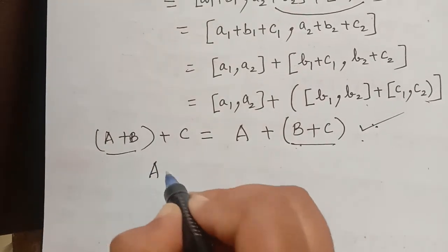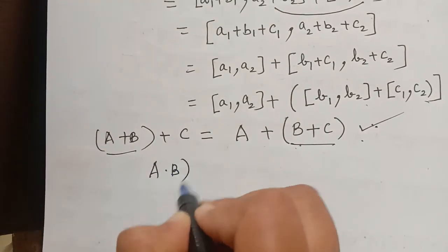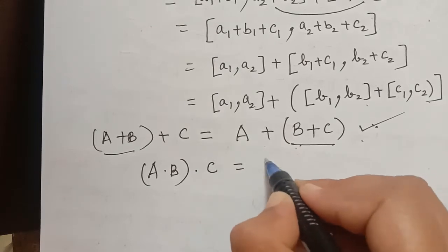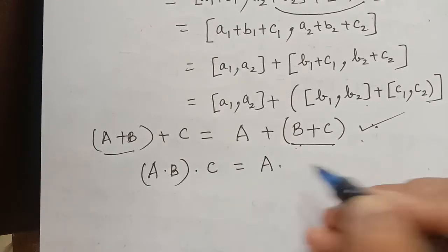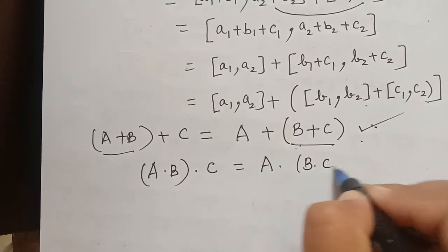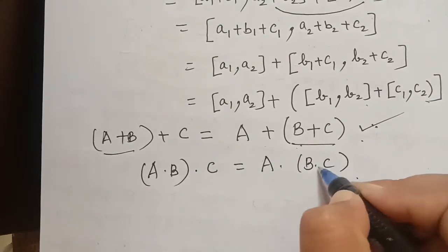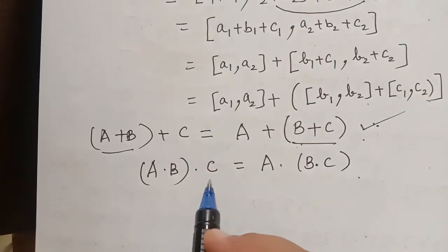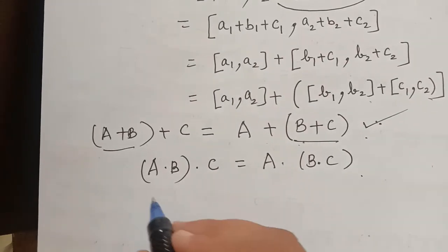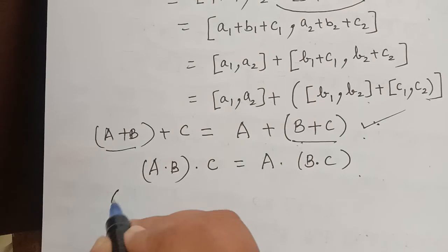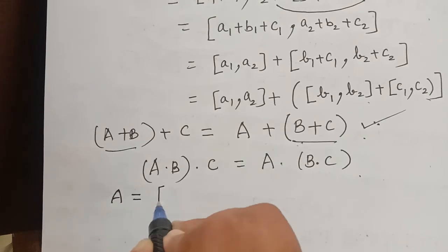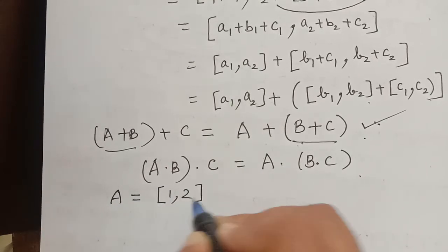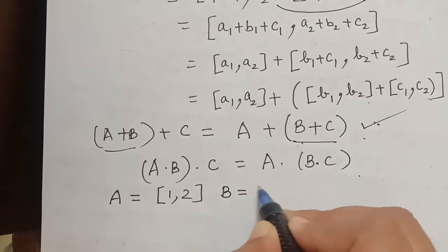Next we shall prove that it is multiplicatively associative, for which we have to prove that A multiplied with (B multiplied with C) is equal to (A multiplied with B) multiplied with C. We will consider the left hand side first, and we shall prove this by considering a specific example.